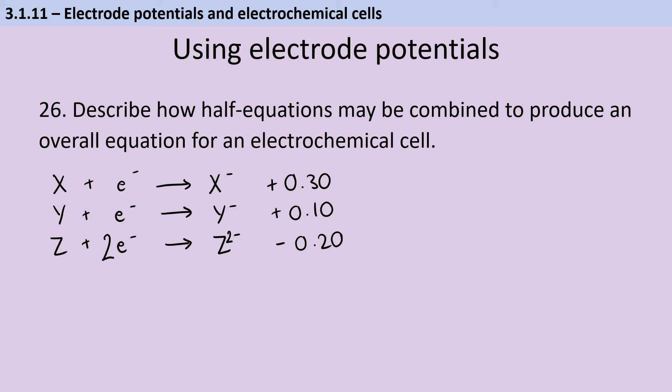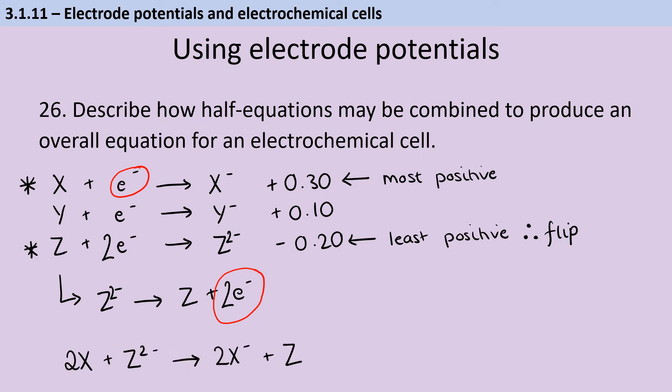So the first thing I need to do, if I'm going to combine these half equations for X and Z to make an electrochemical cell, is identify which is the more positive and which is the more negative. So here I can see that X is more positive than Z. So it doesn't actually matter that Z is giving me a negative EMF. Even if I was doing this with X and Y, the Y would still be the less positive value. So that's the one I'm going to flip. So this is going to turn into an oxidation potential instead. So Z²⁻ reacts to form Z and two electrons. Now, because I've got two electrons in the second one and only one in my equation for X, I'm going to need to multiply up. So I'm going to finish with 2X reacting with Z²⁻ to give me 2X⁻ ions and one Z.